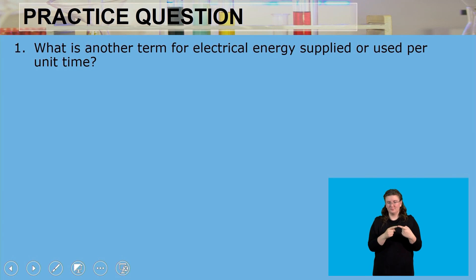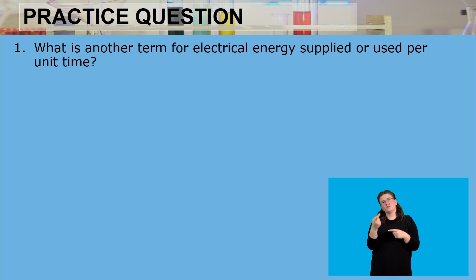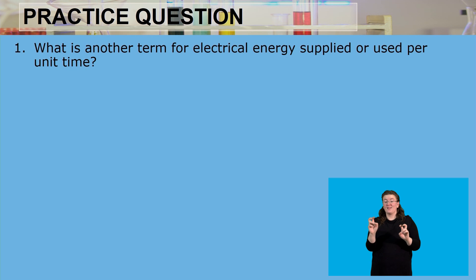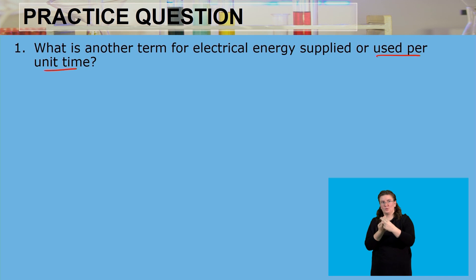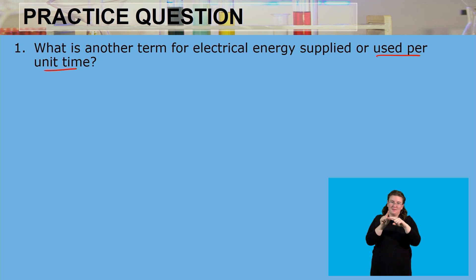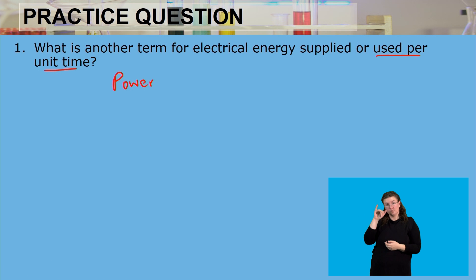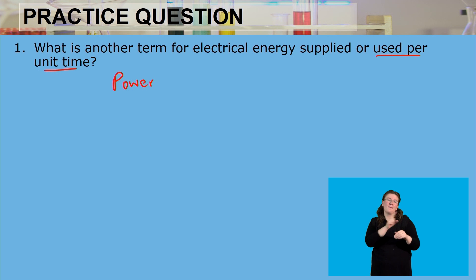Our first practice question asks: what is another term for electrical energy supplied, or for electrical energy used per unit time? Remember, per unit time means we are dividing by time, so energy divided by time is going to be power, because joules per second, or energy over time, is power.